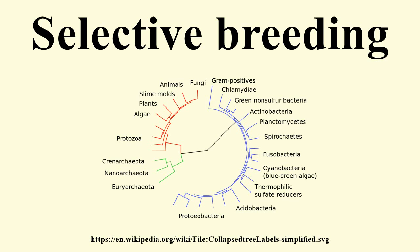Crossbreeds are a mix of two purebreds, whereas mixed breeds are a mix of several breeds, often unknown. Animal breeding begins with breeding stock, a group of animals used for the purpose of planned breeding.